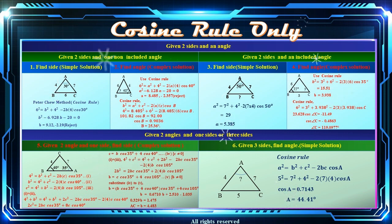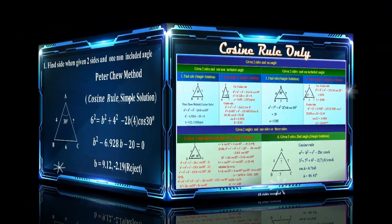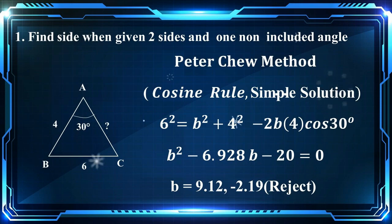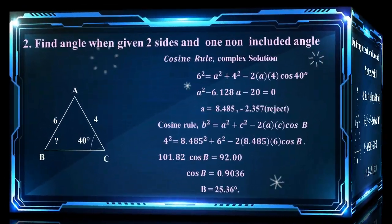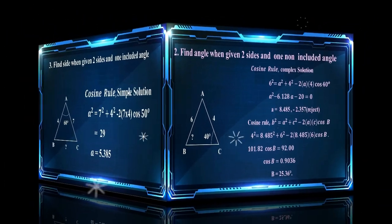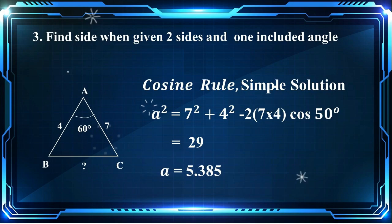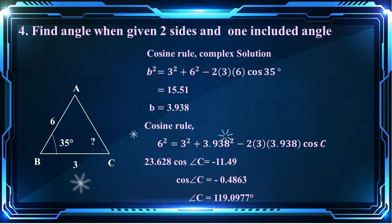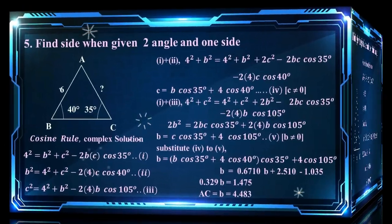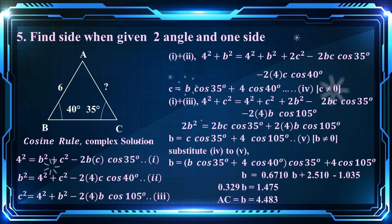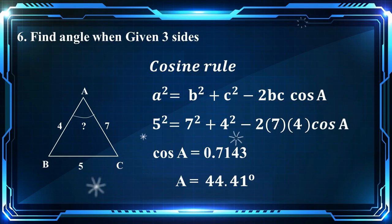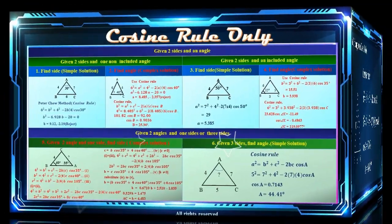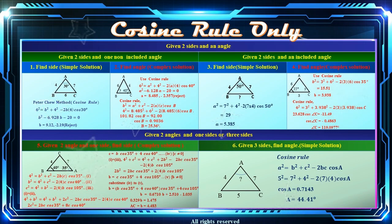Generally, triangle problems can be divided into six categories, all of which can be solved by the cosine rule, as shown in the figure. The six types of triangle problems are: 1. Find side when given two sides and one non-included angle. 2. Find angle when given two sides and one non-included angle. 3. Find side when given two sides and one included angle. 4. Find angle when given two sides and one included angle. 5. Find side when given two angles and one side. 6. Find angle when given three sides. All triangle problems can be solved using the cosine rule.